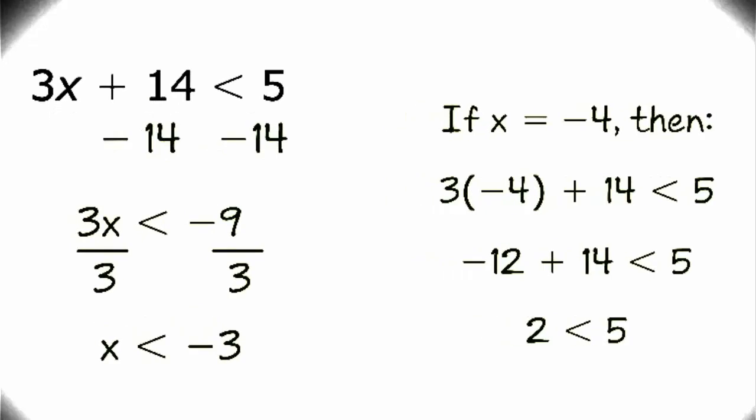x must be less than negative 3 for this inequality to work. x cannot be equal to negative 3, since it would make both sides of the inequality equal. Also, x cannot be greater than negative 3, since it would make the left side of the inequality greater than the right side, which would be false.